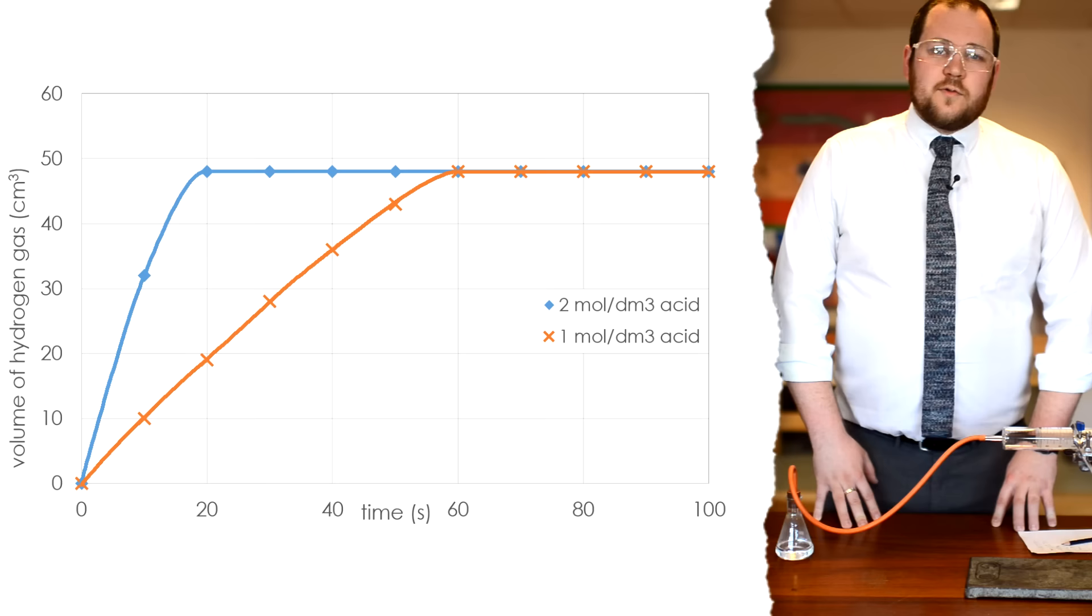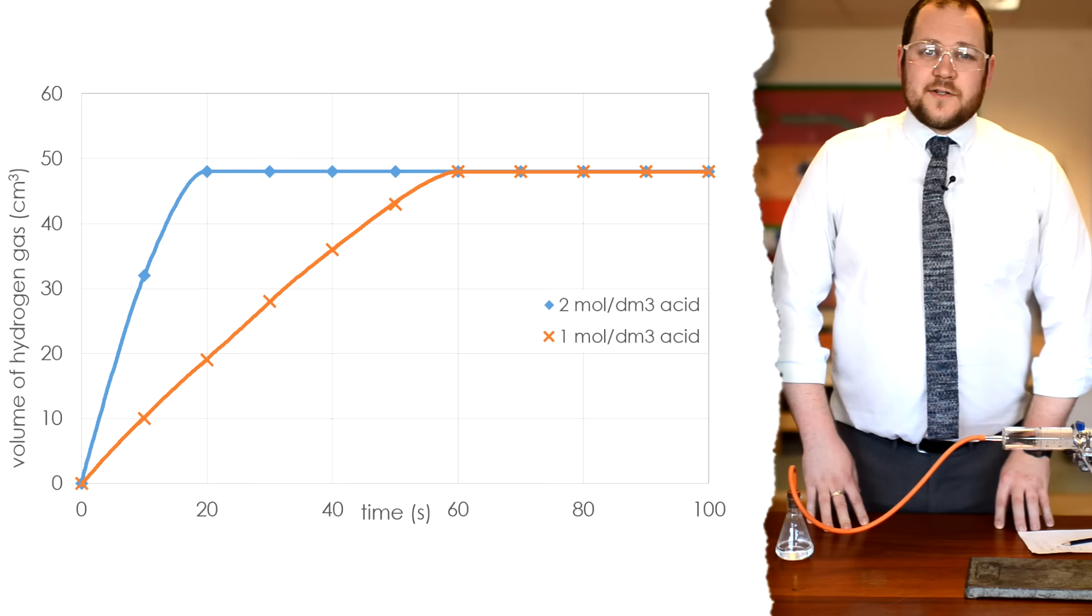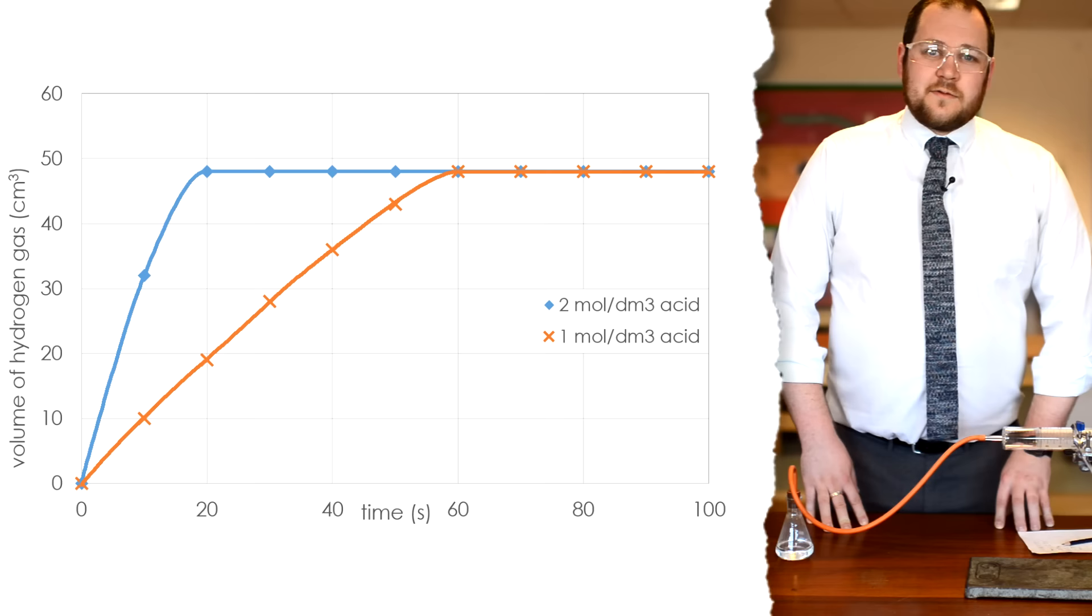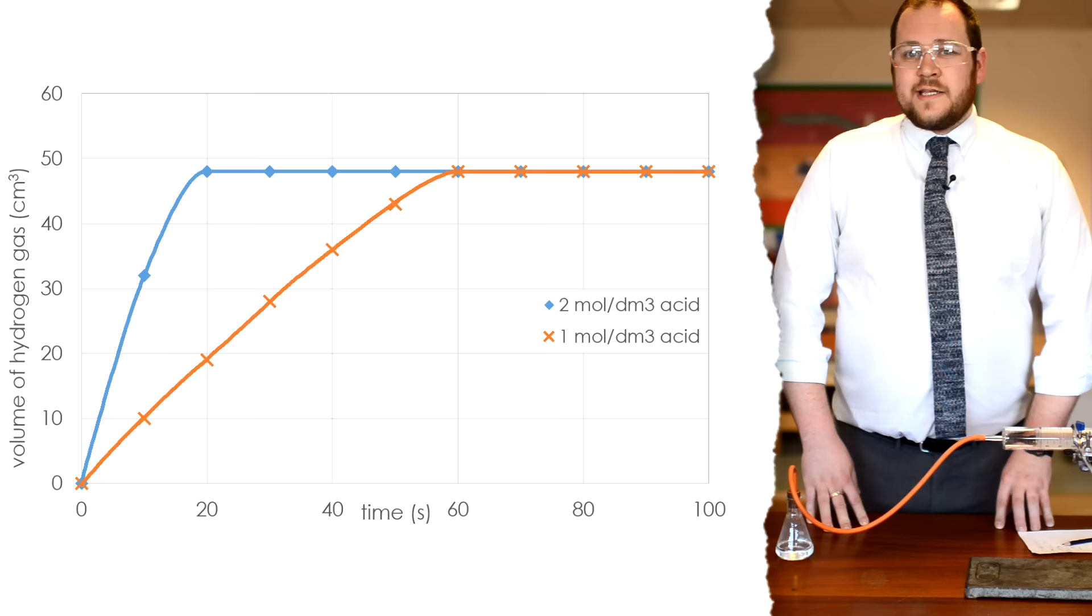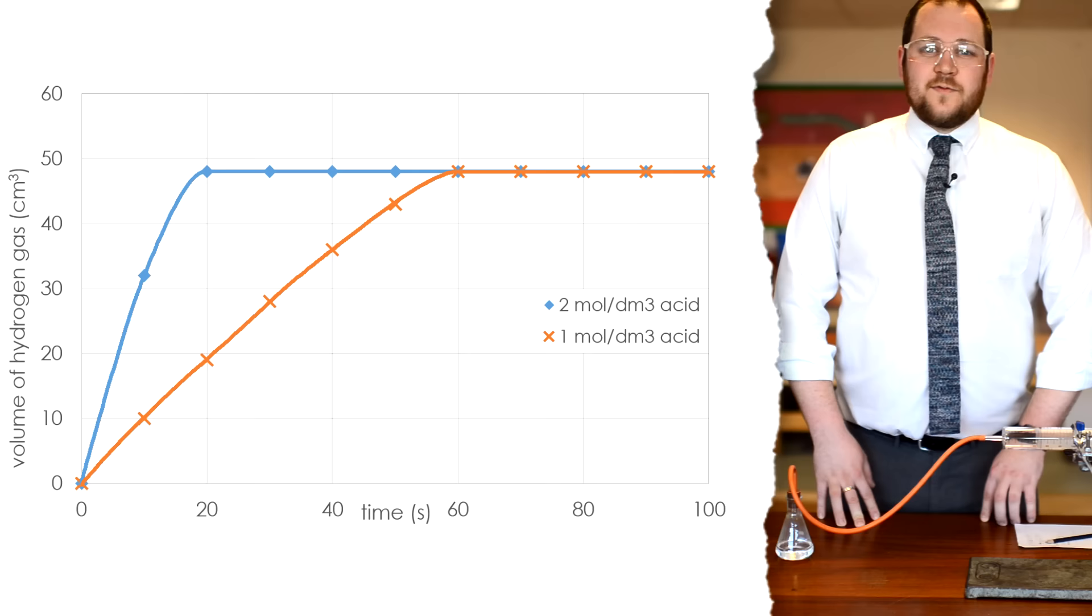The results reach the same point, that's because we use an excess of hydrochloric acid for this reaction. That means that the magnesium is the limiting reactant. The reaction will stop when all of the magnesium has reacted and so that means there's only a certain volume of gas that can be produced.